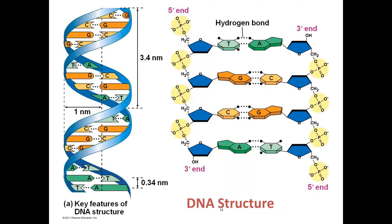If we look at the picture of a DNA double helix, what you can see is that the bases are in fact stacked like rungs of a ladder. We do have a helical structure, and the two chains are oriented in opposite directions. One chain runs from 5' to 3' in this direction, while the other chain is anti-parallel, running from 5' to 3' in the opposite direction.